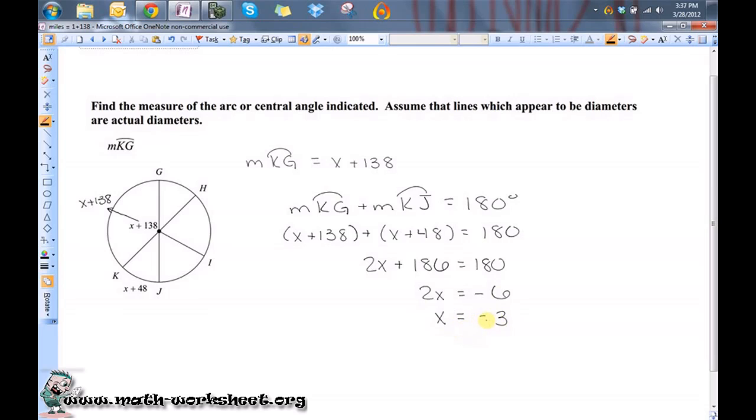Now, don't let the fact that this is negative throw you off. We can have X be negative because it doesn't represent the actual measure of any one of these angles. It just represents X. It'll be used to determine the measure of these angles and the measure of these arcs.